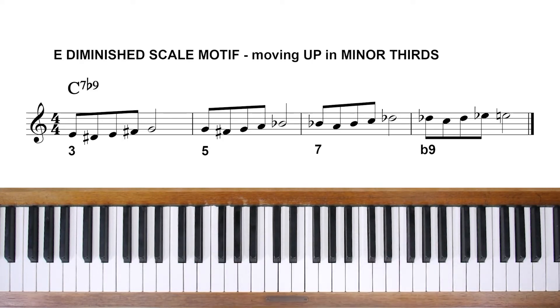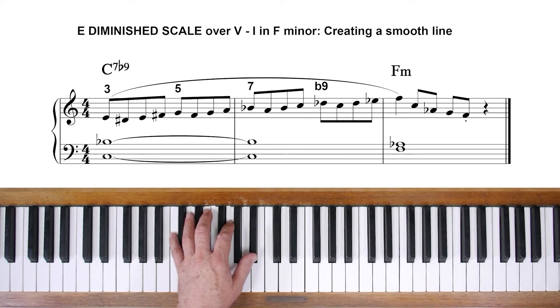Many great lines can be formed from four consecutive notes of the diminished scale. Here's a basic pattern. Here it is again, tweaked to make a continuous line, resolving to F minor to finish.